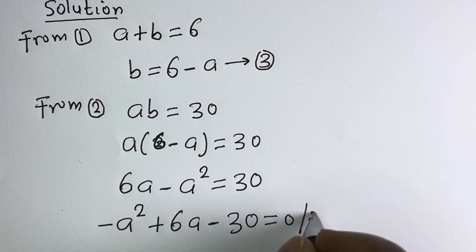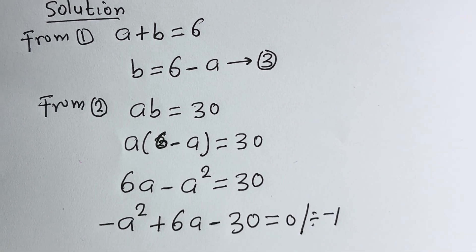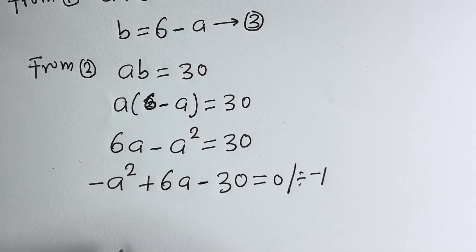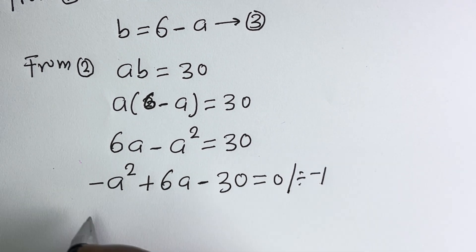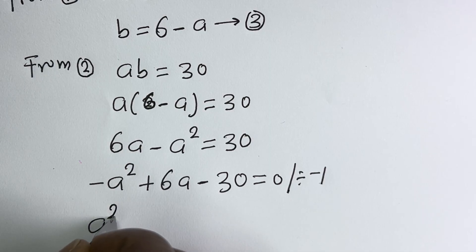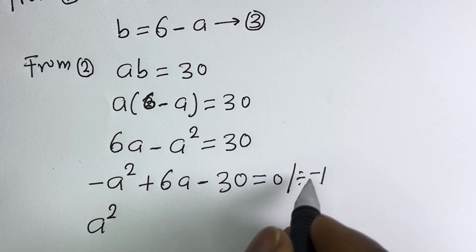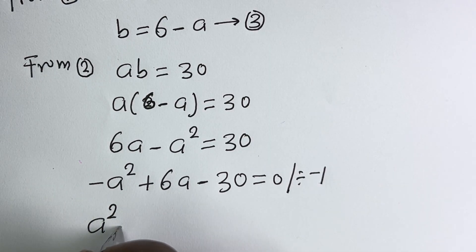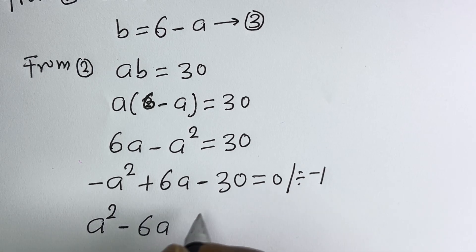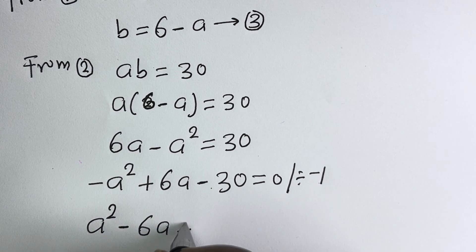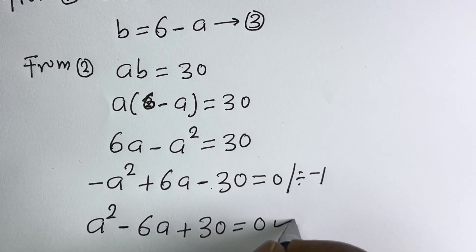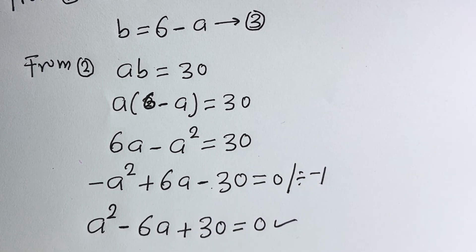Then this is minus A squared plus 6A minus 30 is equal to 0. Let's divide all through by minus 1, giving A squared minus 6A plus 30 is equal to 0. This is a quadratic equation.